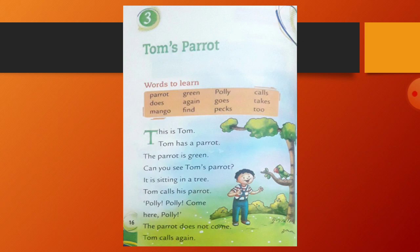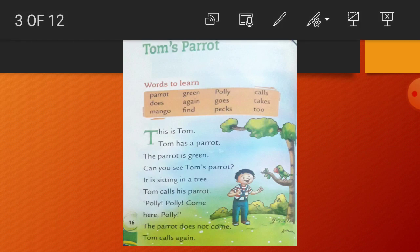This is Tom. Tom has a parrot. The parrot is green. Can you see Tom's parrot? It is sitting in a tree. Where is Tom's parrot? This is Tom's parrot. Tom calls his parrot Polly — Polly, come here Polly. So what is the name of Tom's parrot? The parrot's name is Polly.